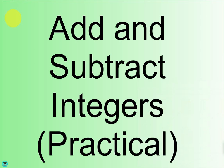Today we're going to apply what we've learned about adding and subtracting integers with some real world problems or real life scenarios. Remember, an integer is just whole numbers — 1, 2, 3, 4, 5, 6, 7, 8, 9, 10 — and their opposites: negative 1, negative 2, negative 3, negative 4, negative 5, negative 6, and so on, plus 0.